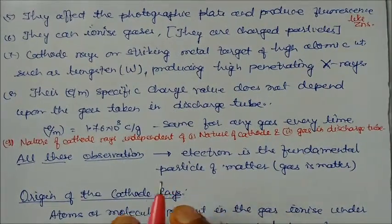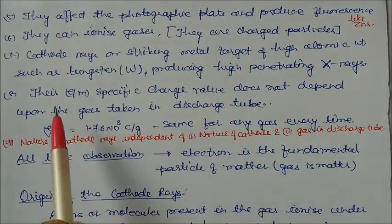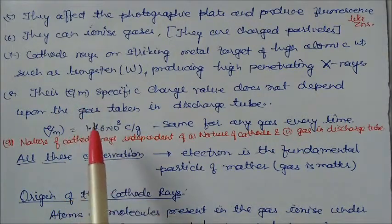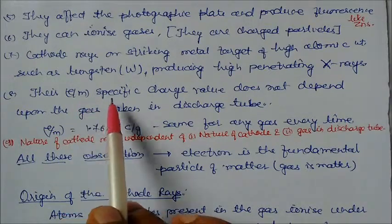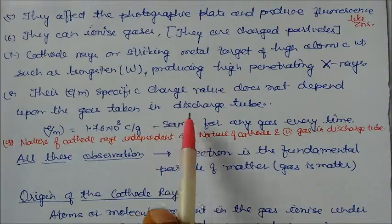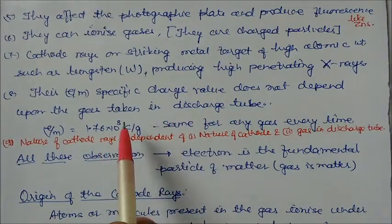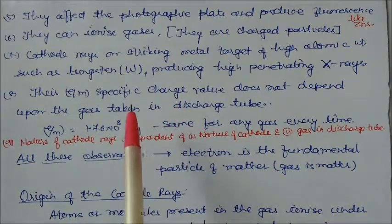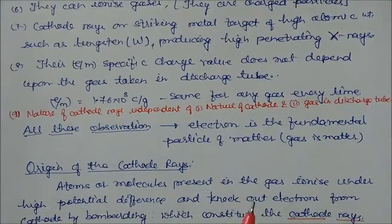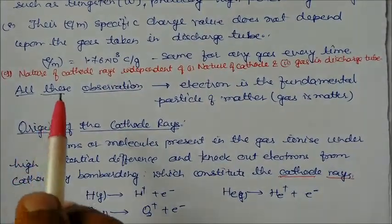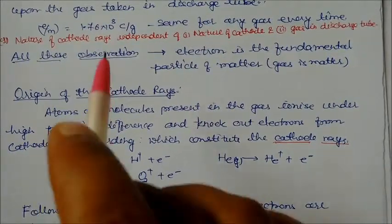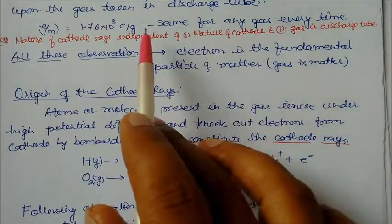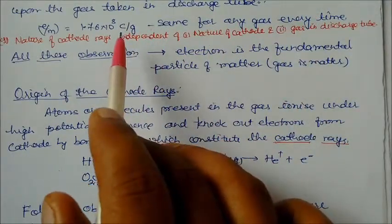The specific charge — that is, charge by mass (e/m) — of cathode rays is important. This value does not depend on the gas used in the discharge tube. Whether you take helium, hydrogen, or nitrogen, the specific charge is always the same. The value of e/m is 1.76 × 10⁸ coulombs per gram. This is the same for any kind of gas.